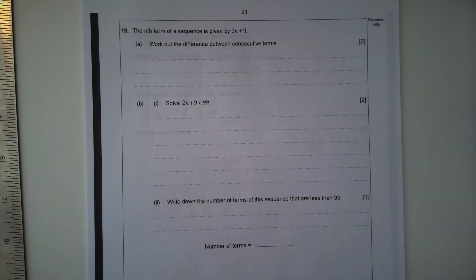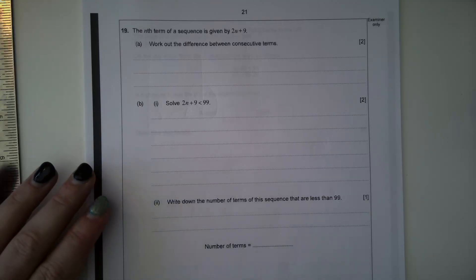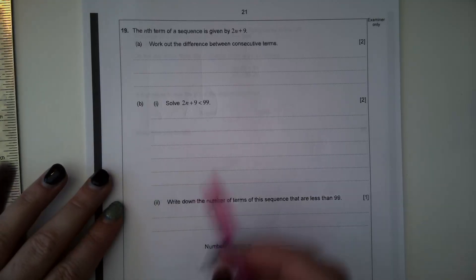Question 19. The nth term of a sequence is given by 2n add 9. Work out the difference between consecutive terms. So if the nth term is 2n add 9, the difference between consecutive terms must be 2.